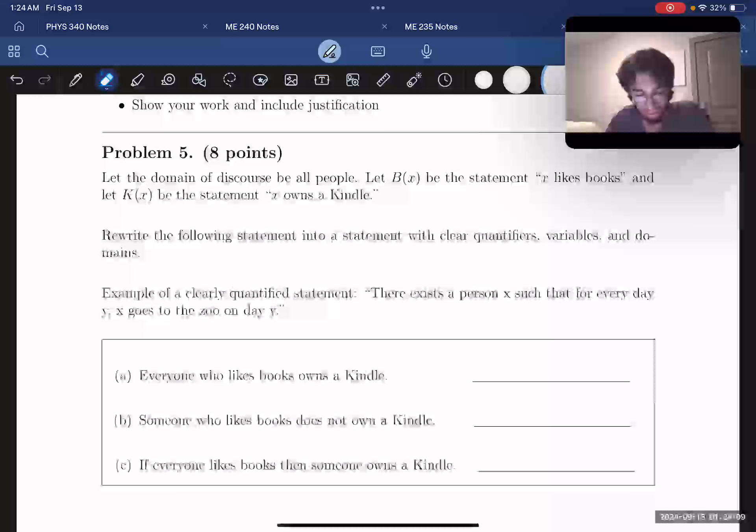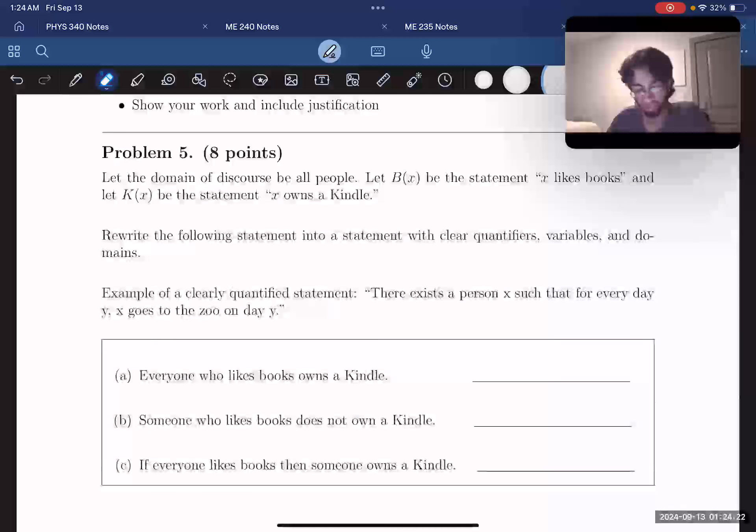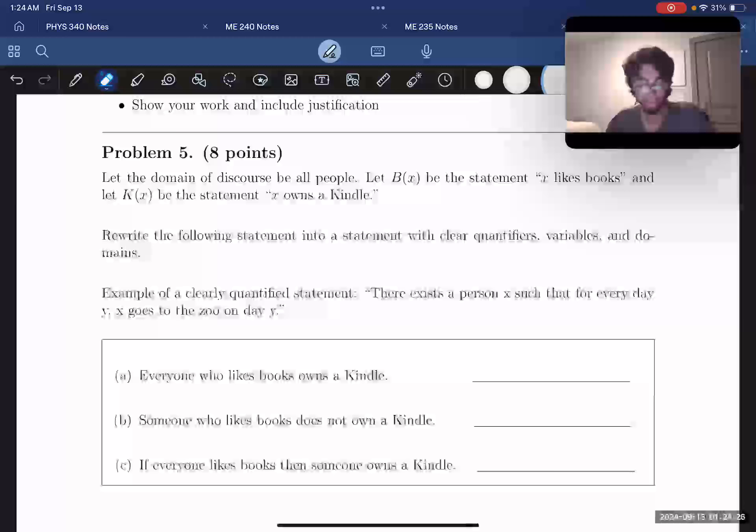So we're told, let the domain of discourse be all people. Let B of X be the statement X likes books, and let K of X be the statement X owns a Kindle. And we're asked to rewrite the following statement into a statement with clear quantifiers, variables, and domains.